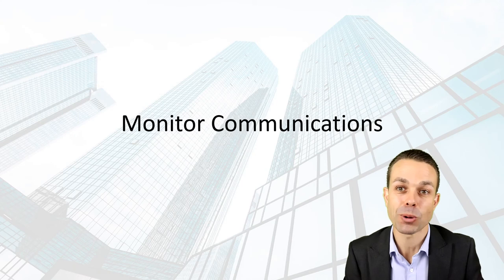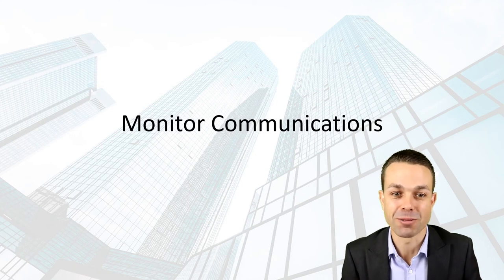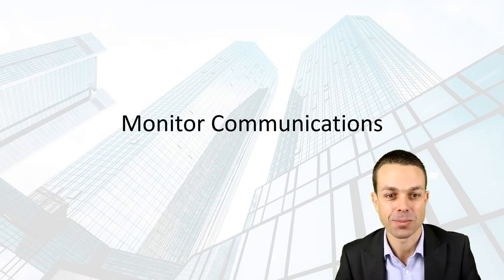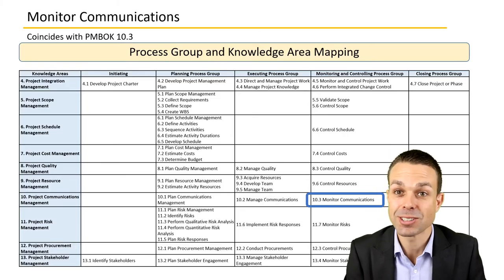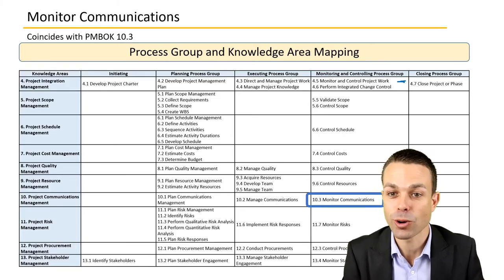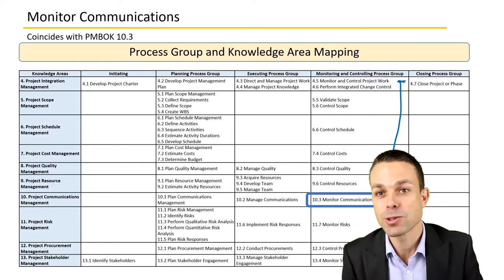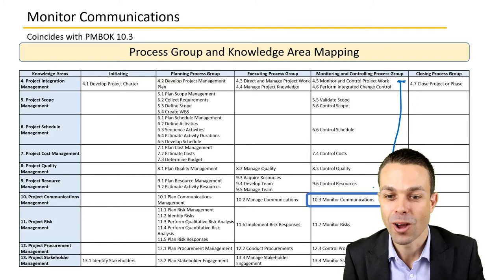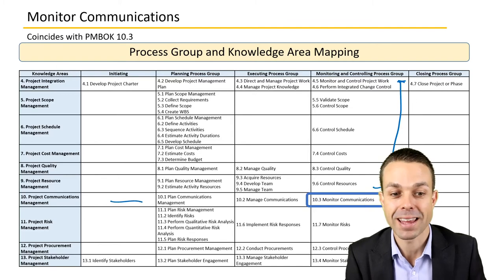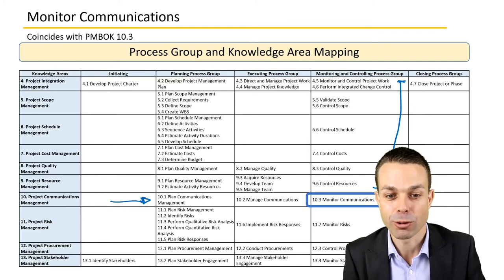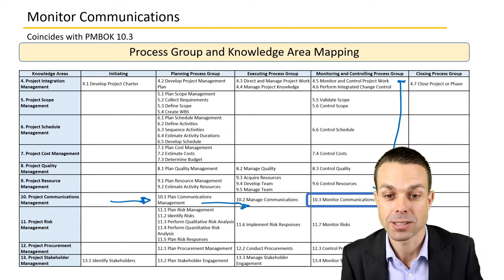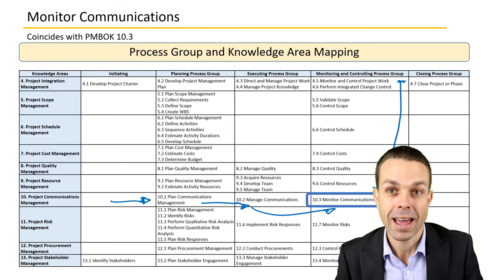Welcome back to these processes within the project management body of knowledge. This one we're looking at is monitoring our communications. As you can see, we're in the monitoring and controlling process group. This is where we're keeping everything on track and making sure that it doesn't go off track. We've already planned our communications management, we've already managed the communications, and now we just need to make sure that everything is traveling as we wanted it to.